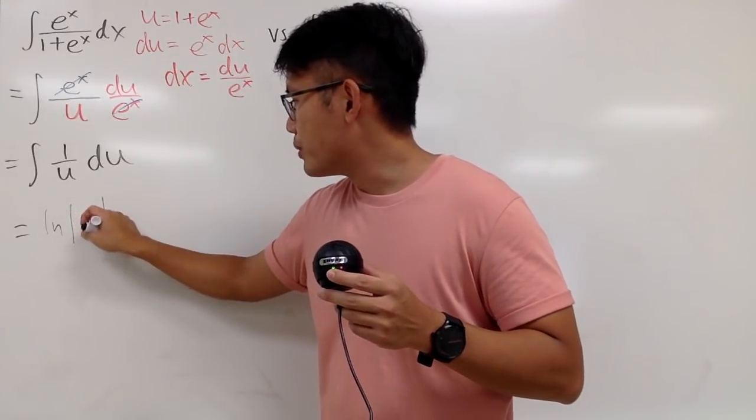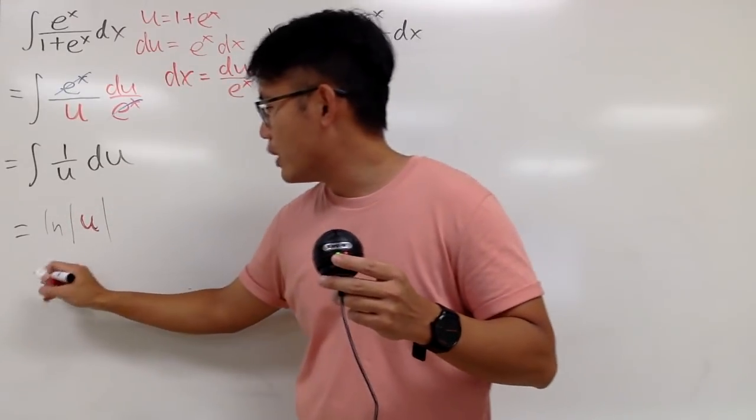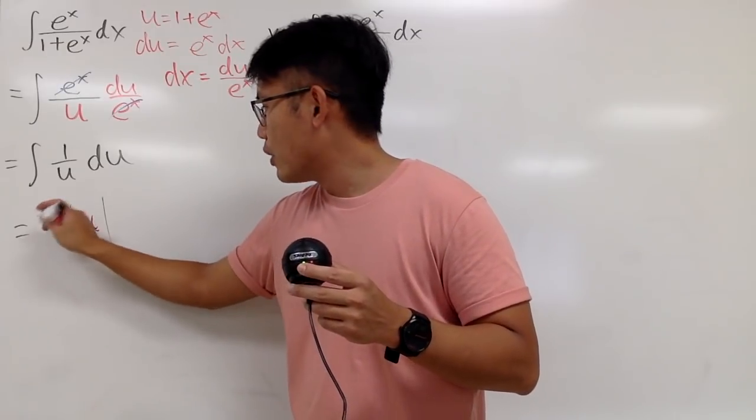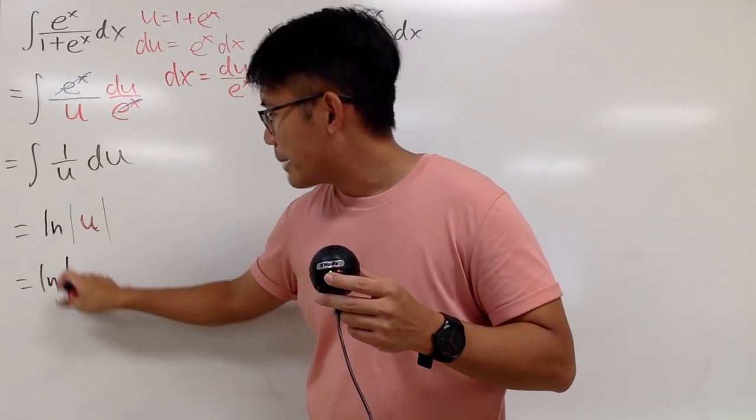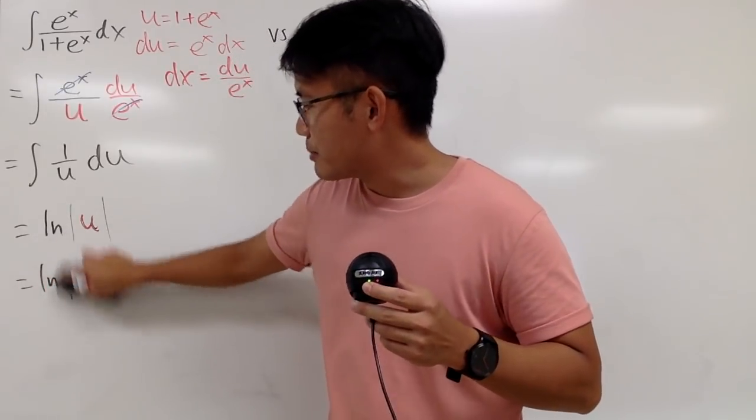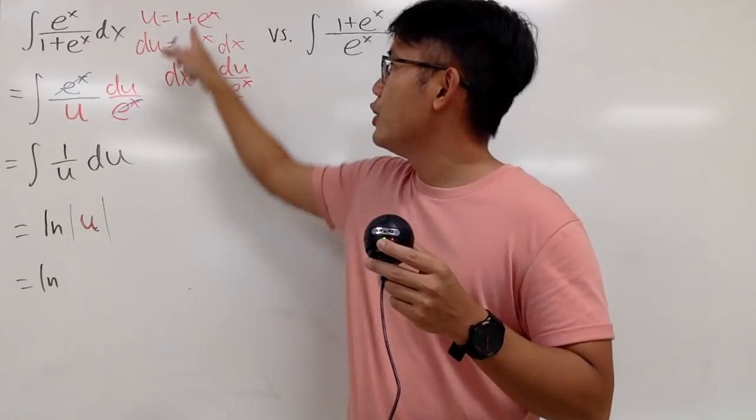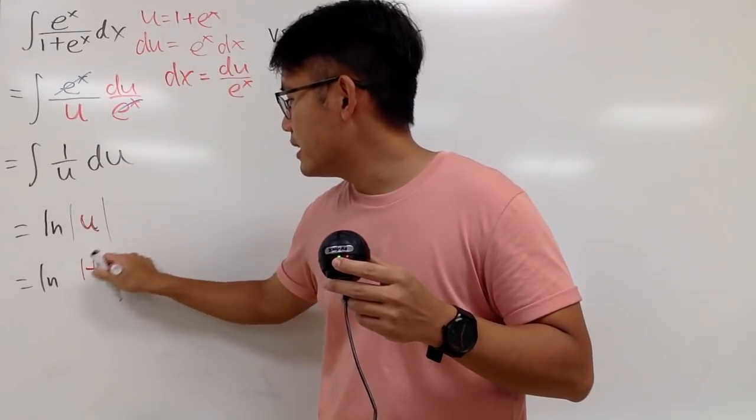And in the end, of course, we put the u back, which is 1 + e^x. So we see that this is actually going to be ln absolute value. Well, actually, let me not put the absolute value yet, because I see u is 1 + e^x.